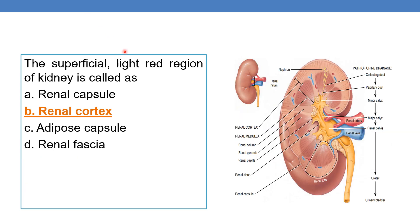Next question: the superficial light red region of the kidney is called the renal cortex. Internally, the kidney is divided into renal cortex and renal medulla. The inner region is called the renal medulla, indicated by dark red color, whereas the outer superficial light red region is called the renal cortex. Option B is the correct answer.